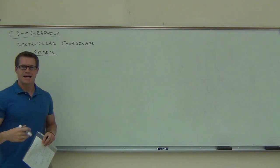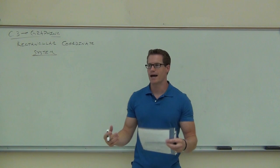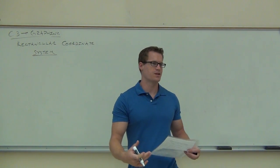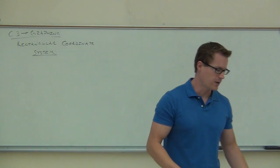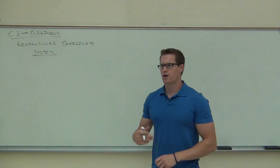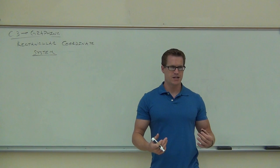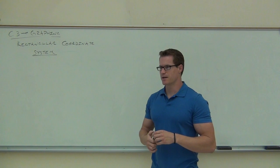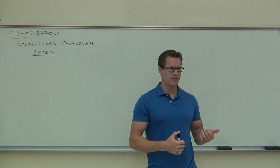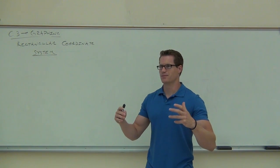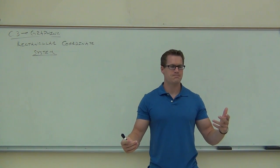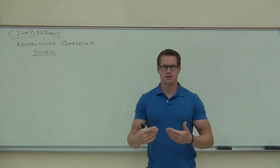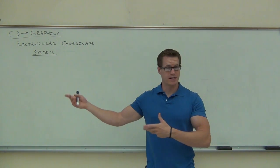This has another name too — it's also called the XY axis, where we have the X and Y axis crossing, making up a two-dimensional plane. It's also called the Cartesian plane. It's called the Cartesian plane because of a guy named René Descartes — a philosopher, mathematician, kind of an all-around guy. He is credited with first discovering the Cartesian plane, the rectangular coordinate system.